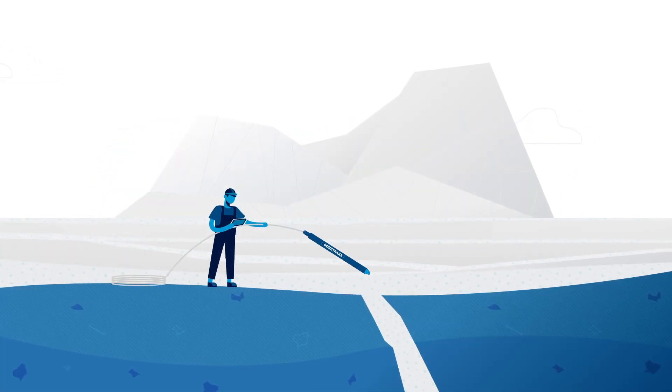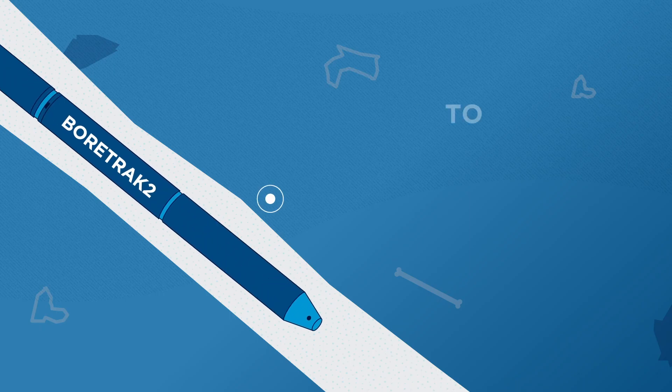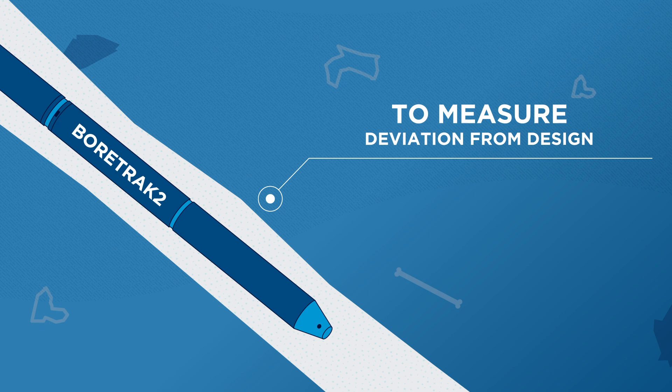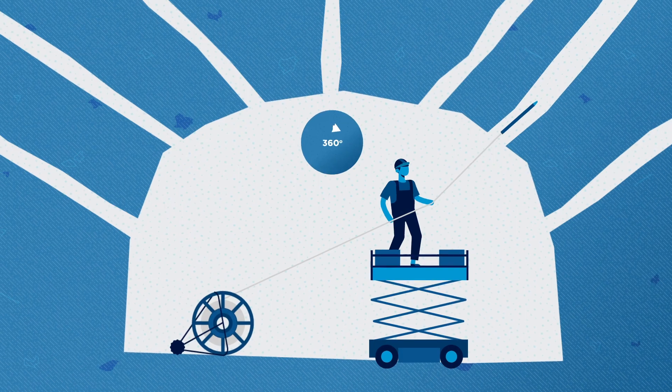Once the boreholes have been drilled, the BoreTrack 2 can be deployed into the boreholes to measure how they were drilled. This survey data can then be compared to the design information to determine any deviation from the design.